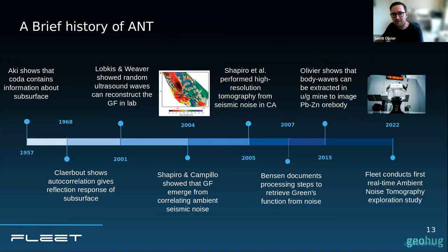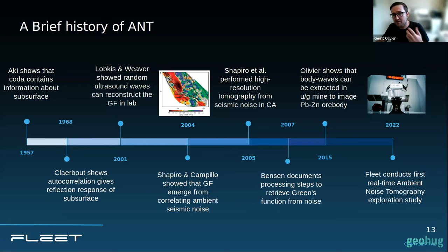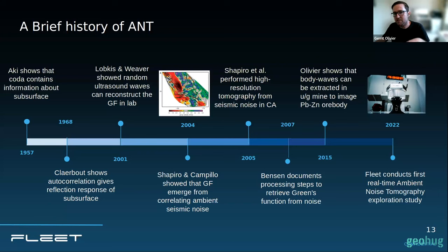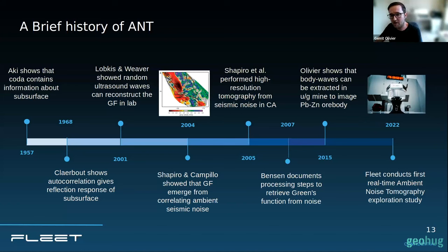Then there were laboratory measurements showing that in practice, if you have two receivers and record noise, you can retrieve the same signal as if you replaced one with a source. In 2004, Nicolás Shapiro and Michel Campillo showed you can use noise from the ocean in California to generate Green's functions or virtual active source signals. In 2005, the first tomography application was shown, also in California. Since 2005, there have been thousands of applications on crustal and regional scales. And in 2015, I was involved in a study using sensors underground in active operating mines to image an orebody and extract body waves.